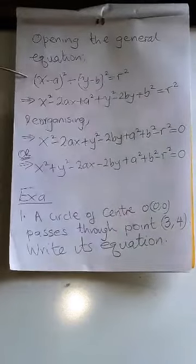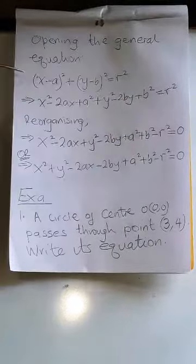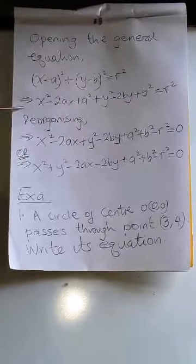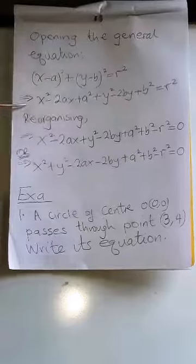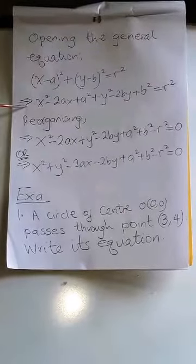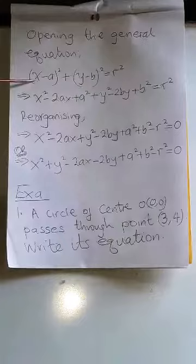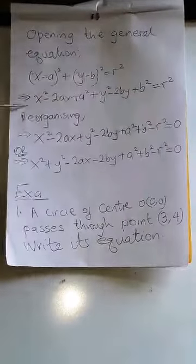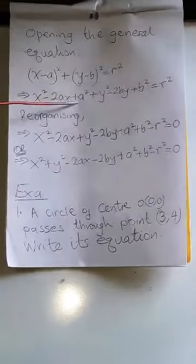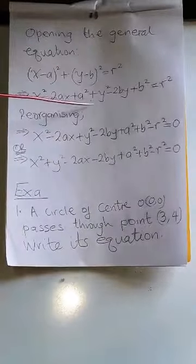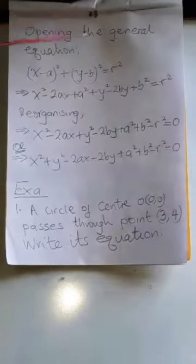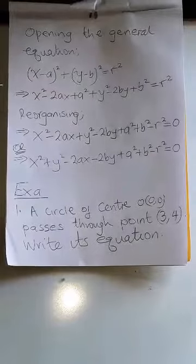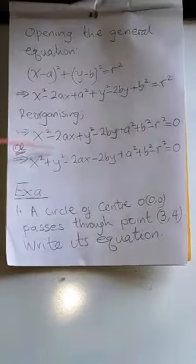Now we have the general equation of a circle centered at (a, b). If we expand this equation, opening up (x - a)² gives x² - 2ax + a², and opening up (y - b)² gives y² - 2by + b², and this equals r².